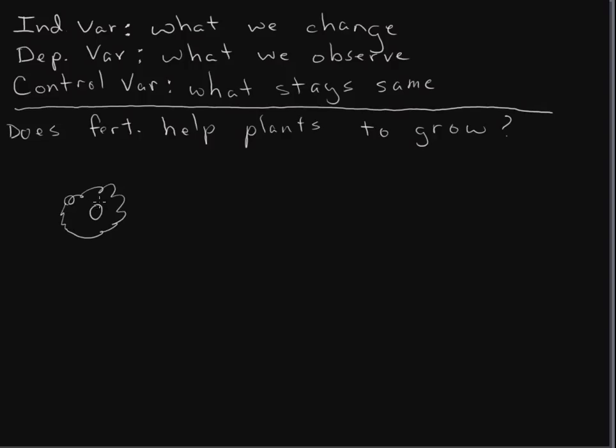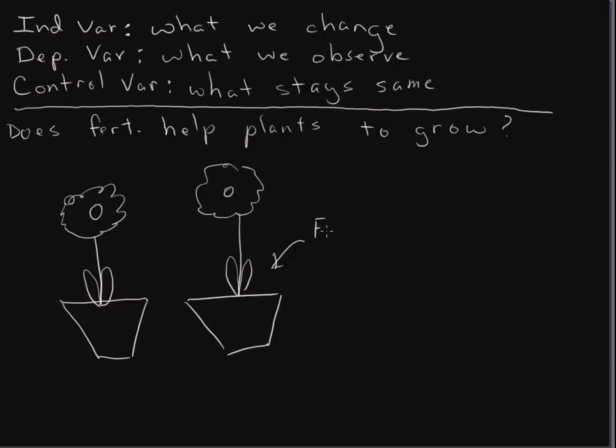So, to set up our experiment, maybe we take a flower, let's take a daisy, and we'll stick it in a pot. Take a similar pot and plant another one. And so, for one, we're going to have fertilizer. And for the other, no fertilizer.